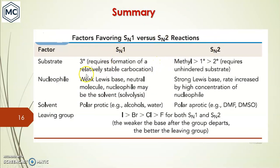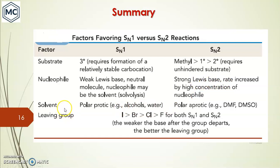In summary, the factors affecting SN1 and SN2 reactions are: for substrate — SN1 best substrate is tertiary, forming a relatively stable carbocation; for SN2 — methyl is most reactive, then primary, then secondary; tertiary usually does not react by SN2. For nucleophile — SN1 does not depend on nucleophile; we use weak bases or neutral molecules; for SN2 we need a strong nucleophile/base and rate increases with higher concentration.